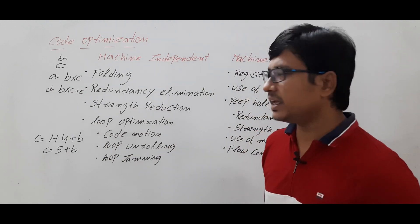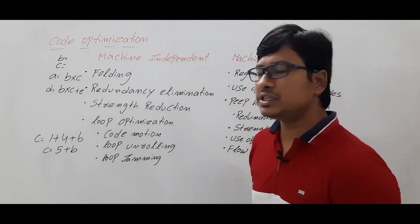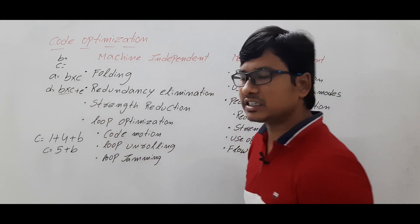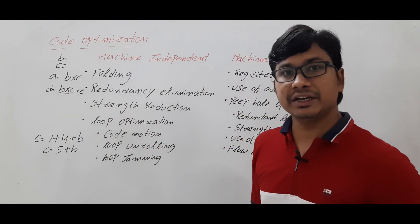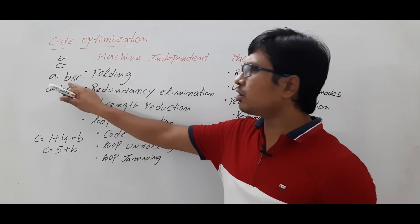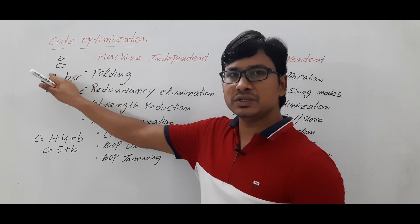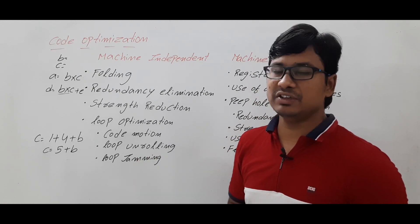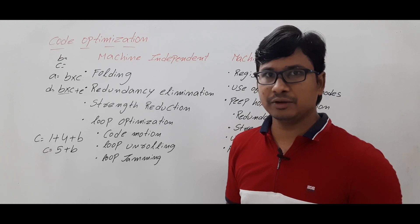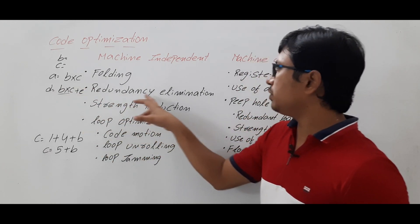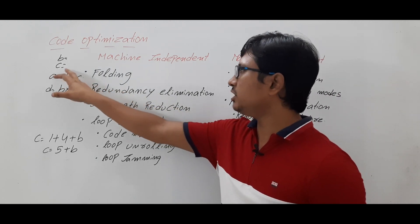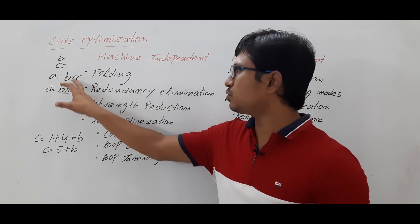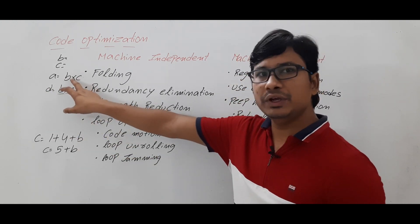Here, A = B*C means you multiply B and C and store the result in A. For D = B*C + E, you don't need to compute B*C again, because between these two instructions the B and C values are not updated. Since the B*C value is already stored in A, you can reuse it. This can be done with the help of a DAG, which is a Directed Acyclic Graph.